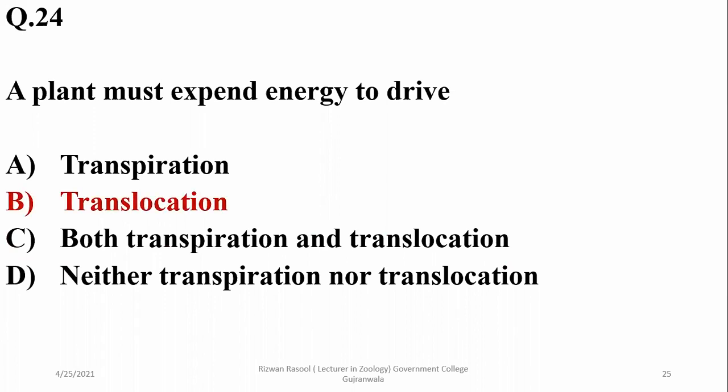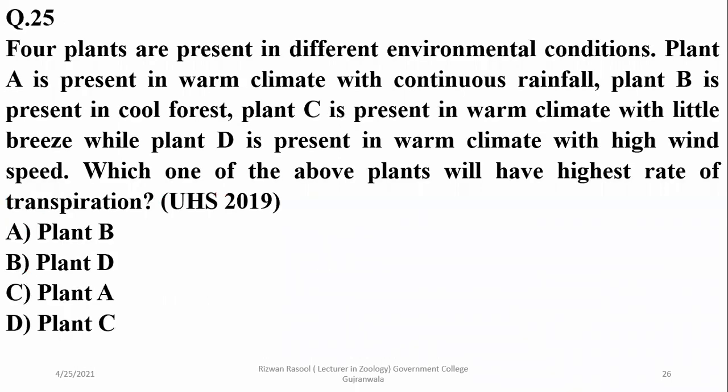Question twenty-four: a plant must expend energy for translocation because during the loading phase — from leaf to sieve tube elements, or sometimes from companion cells to the sink — ATP is required. So Beta is the right option.